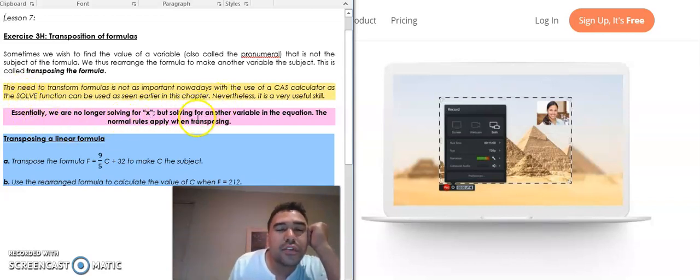But it is still a very useful skill to know. When you do a SAC or an exam where there's a part where it needs you to transpose a formula and is worth more than one mark, you actually have to show the process of how to transpose it. Yes, you can use the CAS calculator to get the answer, but you won't get the full marks that's allocated if it's worth more than one.